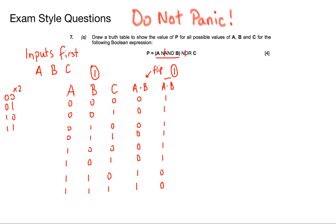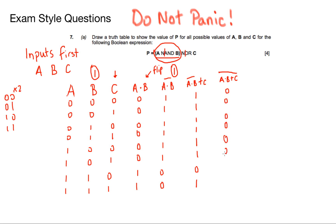That will get you another mark. Once I've got NAND B inside the brackets, I need to do a NOR with C. Remember, a NOR is a knotted OR. I can do an OR with the C column, which gives me 1, 1, 1, 1, 1, 1, 0, 1. Then all I've got to do is flip it, and that gives me 0, 0, 0, 0, 0, 0, 1, 0. And again, that's worth 4 marks — your marks come from your inputs, your A NAND B, your ORing that with C, and your NOR at the end. Break it down to simple steps and you'll be absolutely fine.